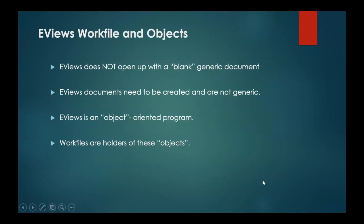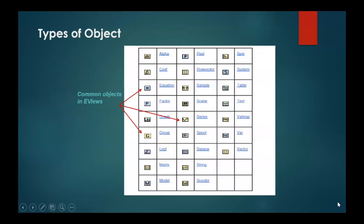Now let's talk about the eViews work file and its objects. eViews is basically not like your Word or Excel. It is basically a blank generic document which needs to be created in order to include the data on which you want to work. It is an object-oriented program which is basically a collection of information relating to particular analysis in terms of different graphs, tables, series, groups and equations. The work files are basically the holders of these objects.